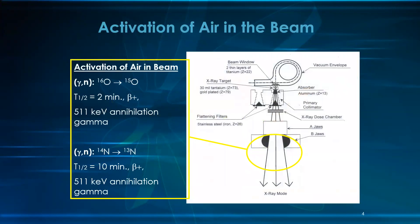Activation of air in the beam. Air is composed mainly of oxygen and nitrogen. Oxygen will become radioactive with a half-life of 2 minutes, and it can produce 511 keV annihilation photons.